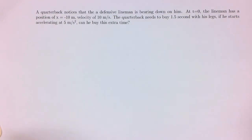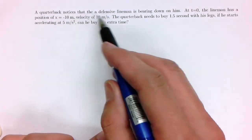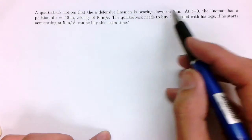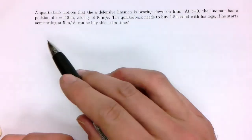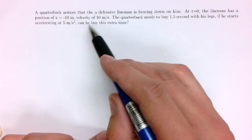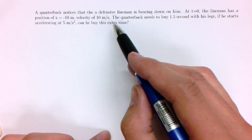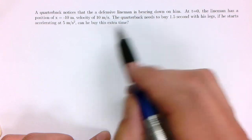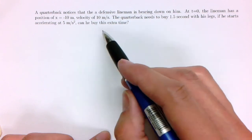In this video, we're going to solve the following problem. A quarterback knows the defensive lineman is bearing down on him. At t equals 0, the lineman has a position of minus 10 meters, velocity of 10 meters per second. The quarterback needs to buy 1.5 seconds. If he starts accelerating at 5 meters per second squared, can he buy this extra time?